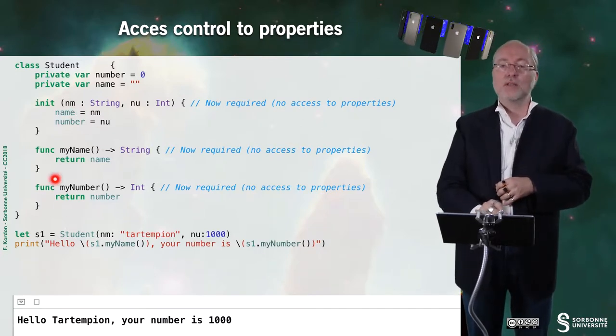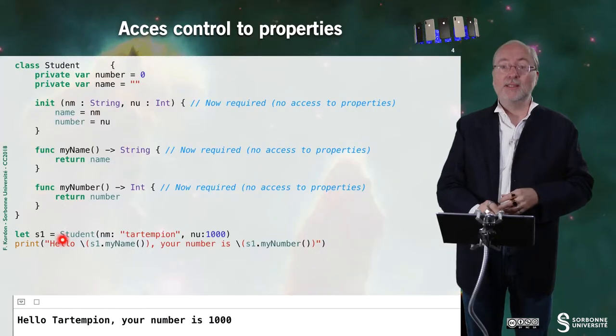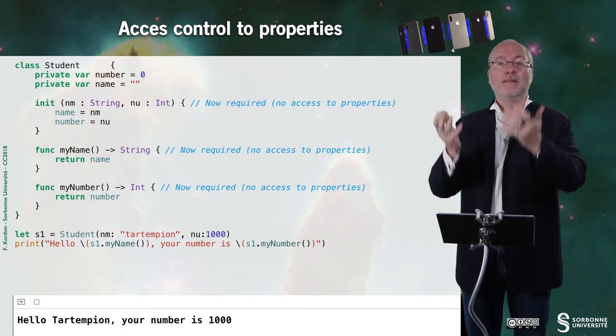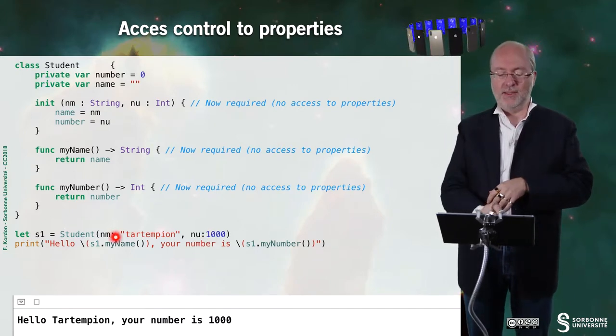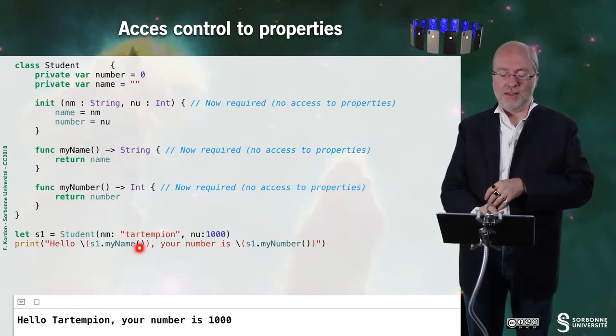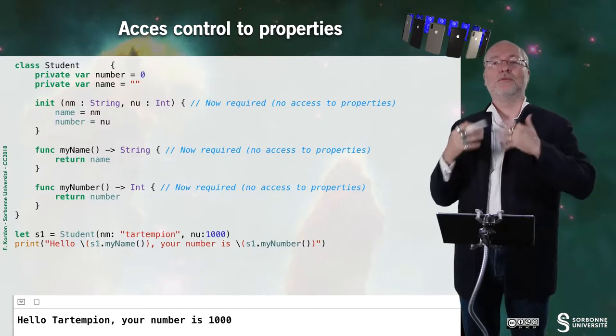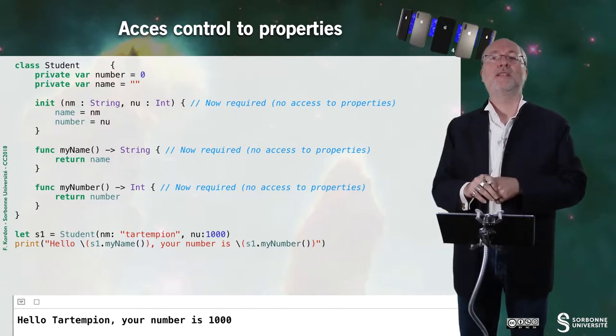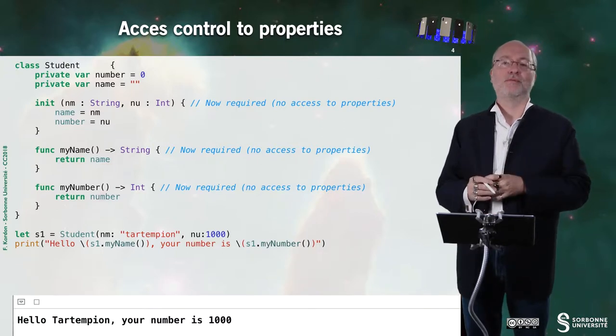And here, some getters. The difference now here is that when I instantiate one occurrence of the class Student, I provide these parameters. And then I can access to the values enclosed in this occurrence thanks to these functions. So once again, very classical.